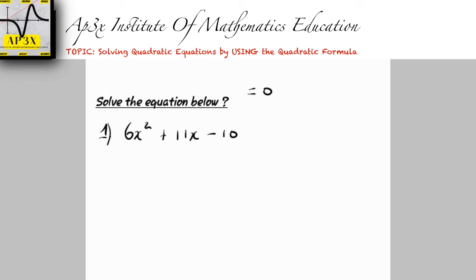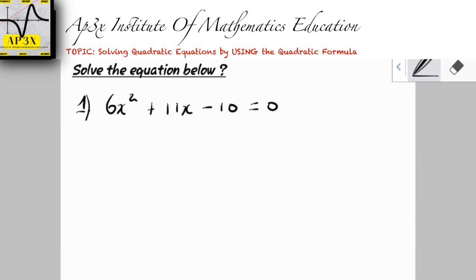Let's get into some examples. You are given: solve 6x² + 11x − 10 = 0. The very first thing you want to do is identify: a = 6, b = 11, and c = −10. Notice that a is the number before x², b is the number before the x term, and c is the constant, negative 10.